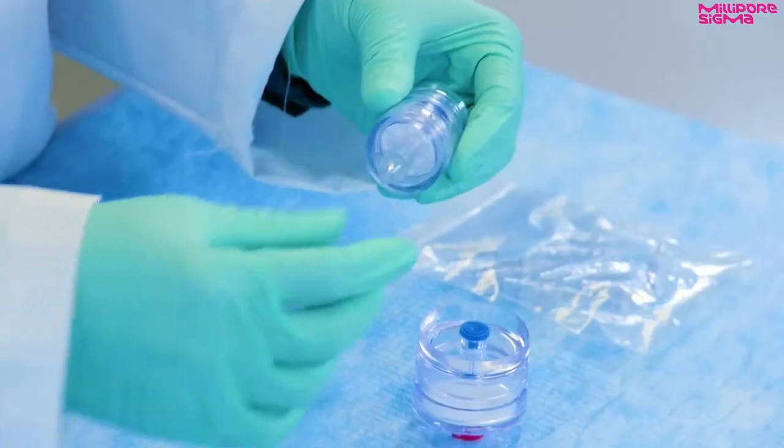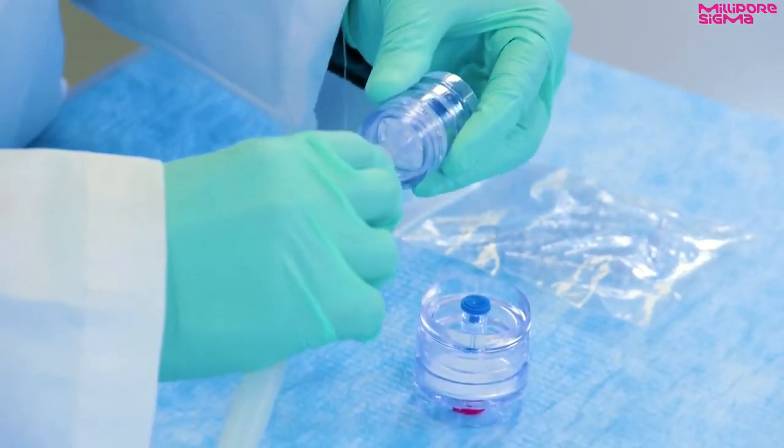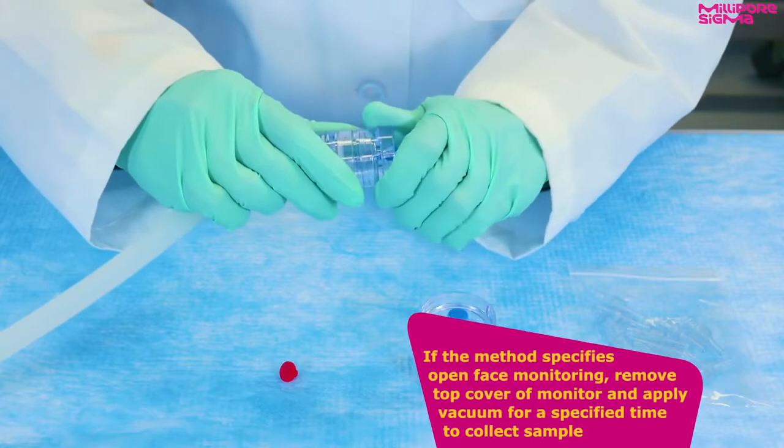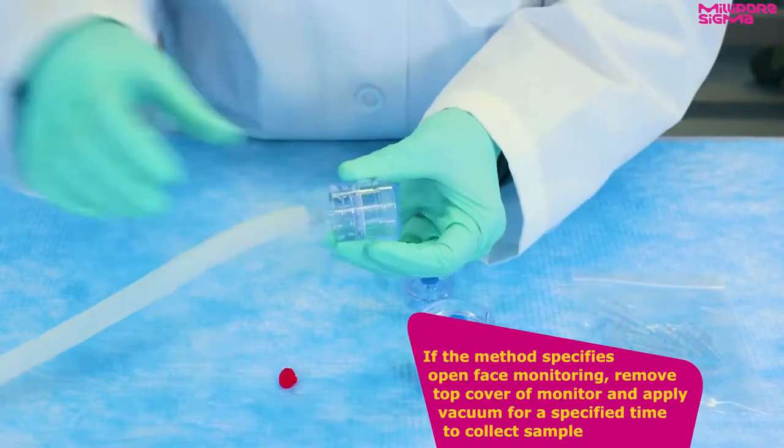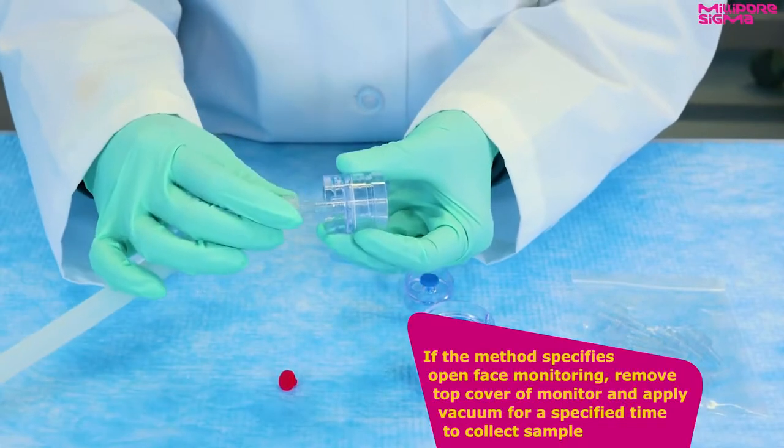Similarly, remove the bottom red plug from the monitoring cassette and insert the plastic hose barbed adapter. Attach the other end to a vacuum source. If the method specifies open face monitoring, remove the top cover of the monitor and apply vacuum for the specified amount of time to collect the sample.